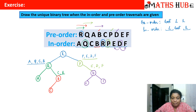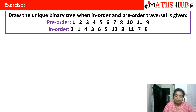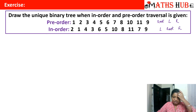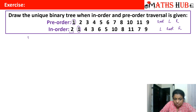I hope you understood. Let me explain one more example so it becomes very clear. You have to draw the unique binary tree when the in-order and pre-order traversals are given. In pre-order: root, then left subtree, then right subtree. In in-order: left first, then root, then right subtree. First, we go to pre-order and see which is the root vertex — 1 is the root vertex. We come back to in-order, search for 1, and find it here. So 1 is the root, and we draw 1.